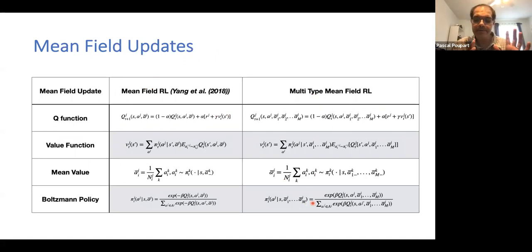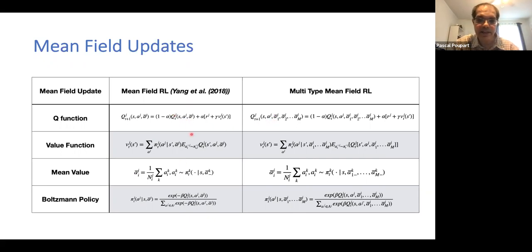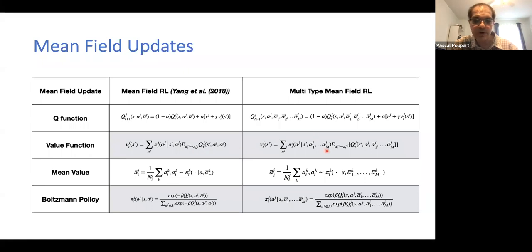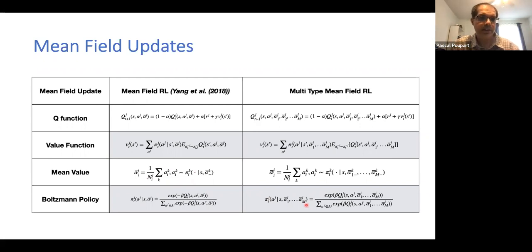In our work, we prove a theorem similar to what Yang et al. did originally — that we can well approximate the Q function of a stochastic game with the Q function for multi-type mean fields, as long as it can be decomposed with respect to groups of agents of different types. We essentially generalize those equations from single type to multiple types. On the left you see a single bar indicating the single mean field; now instead we have a bar appearing M times for the M types, and the Q function, value function, mean field computation, and Boltzmann policy all generalize naturally in this way.